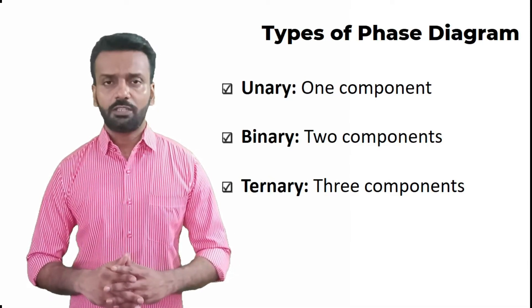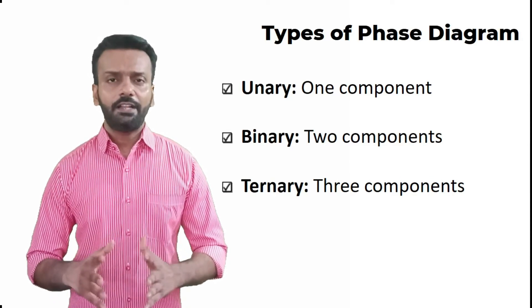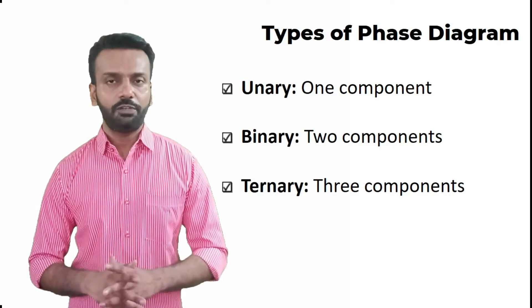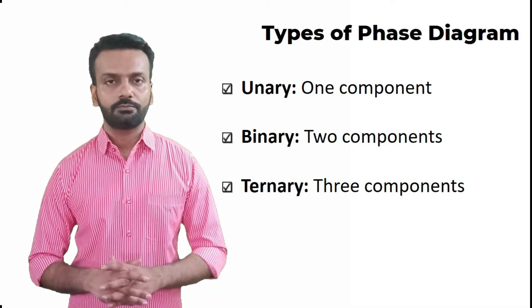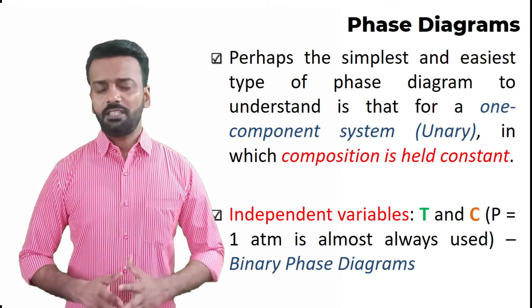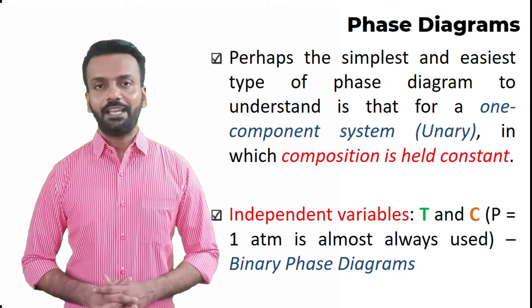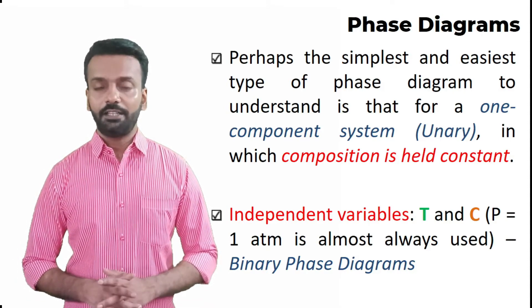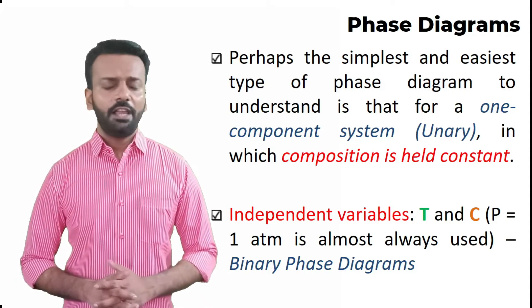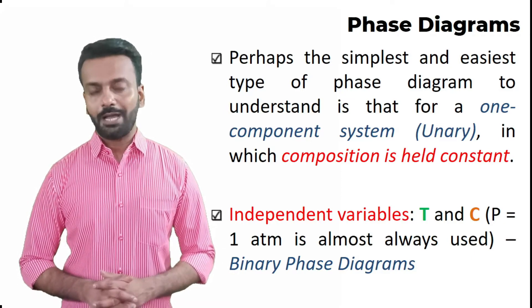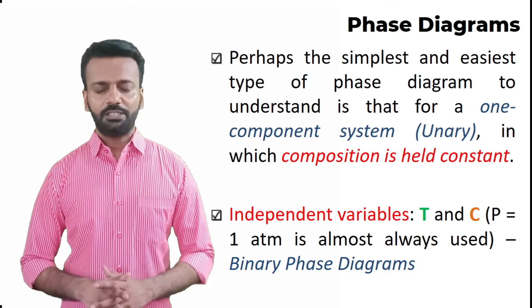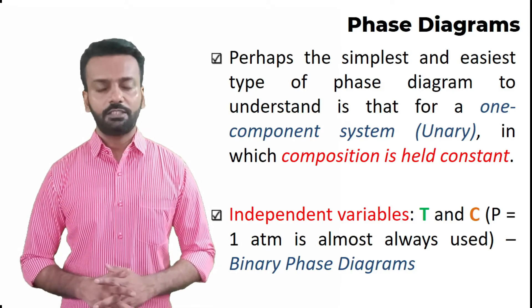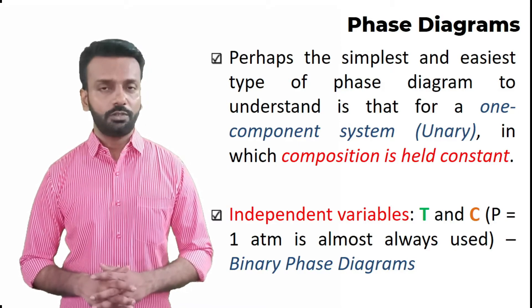In an earlier video we discussed what are the components, what are the phases, and some different definitions related to phase diagrams — you can refer to that video if needed. The simplest is the unary phase diagram, where composition is held constant and pressure and temperature are varied. The binary phase diagram holds pressure constant and varies temperature and composition, and this is the most important phase diagram.